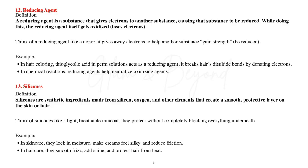In chemical reactions, reducing agents help neutralize oxidizing agents. Number thirteen: silicones. Silicones are synthetic ingredients made from silicon, oxygen, and other elements that create a smooth, protective layer on the skin or hair. Think of silicones like a light, breathable raincoat that protects without completely blocking everything underneath. In skincare they lock in moisture, make creams feel silky, and help reduce friction. In hair care they smooth frizz, add shine, and protect hair from heat.